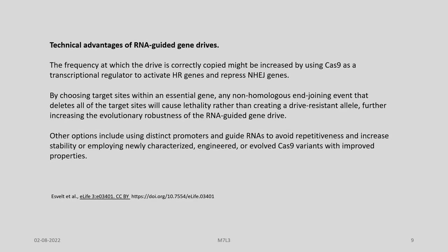The frequency at which the drive is correctly copied might be increased by using Cas9 as a transcriptional regulator to activate HR genes and repress NHEJ genes. By choosing target sites within an essential gene, any NHEJ event that deletes all target sites will cause lethality rather than creating a drive-resistance allele, further increasing the evolutionary robustness of the RNA-guided gene drive. Other options include using distinct promoters and guide RNAs to avoid repetitiveness and increase stability, or employing engineered or evolved Cas9 variants with improved properties.